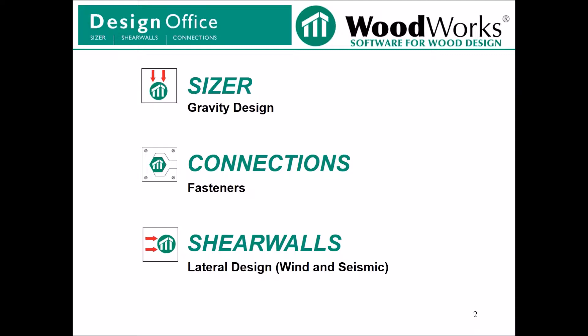Sizer can be used to complete gravity load design. Connections can be used to complete the design of the typical fasteners included in the NDS. And Shear Walls, which is a lateral load design tool, can be used to design light frame wood shear walls up to six stories in height.